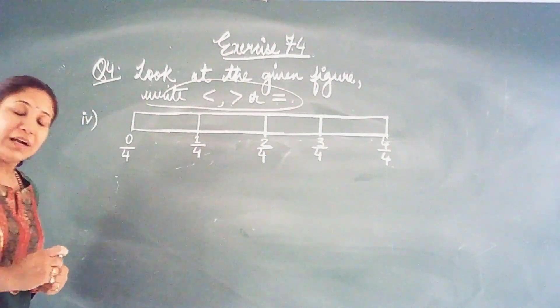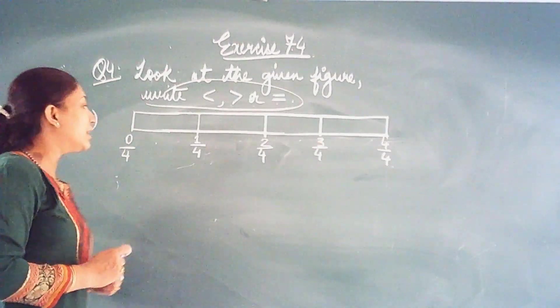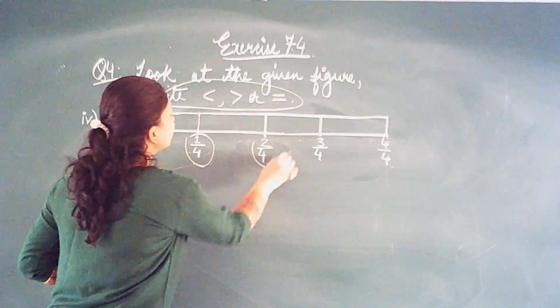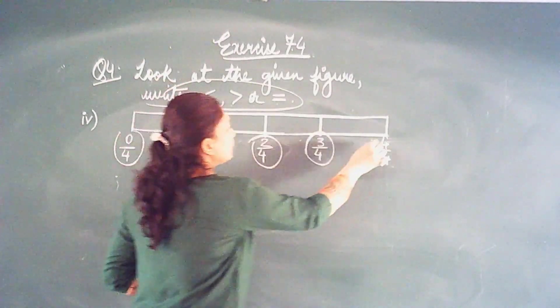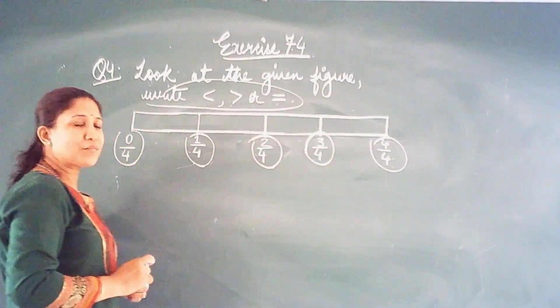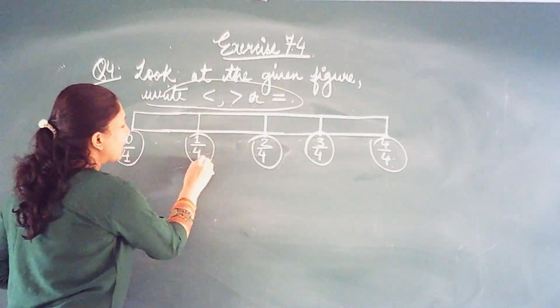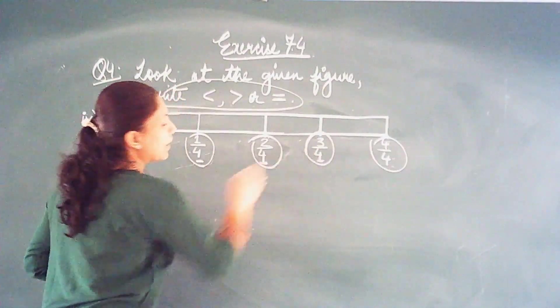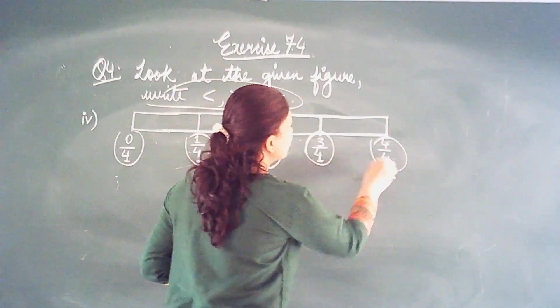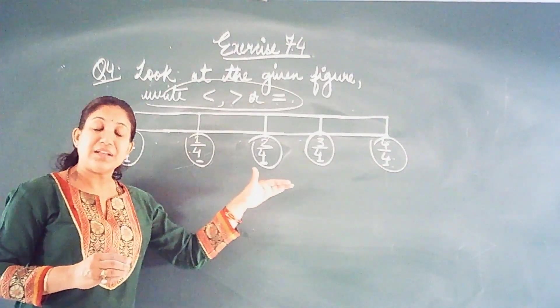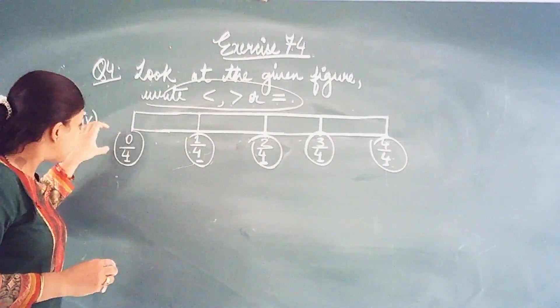So for this let us first see the figure again and carefully watch the fractions which is given. What do you see? 0 by 4, 1 by 4, 2 by 4, 3 by 4 and the last one is 4 by 4.